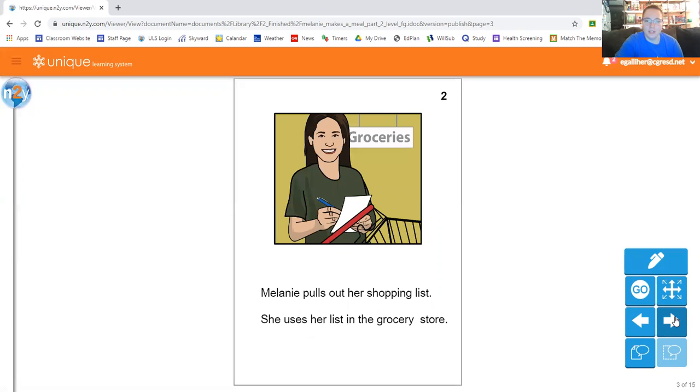Melanie pulls out her shopping list and she uses her list in the grocery store. This is pretty important too. If I don't write a list for when I go grocery shopping I don't end up getting half the things that I need. It's especially bad when I go to the store when I'm hungry because then I just buy things that sound good. So I always write a shopping list. Usually I put it on my phone.